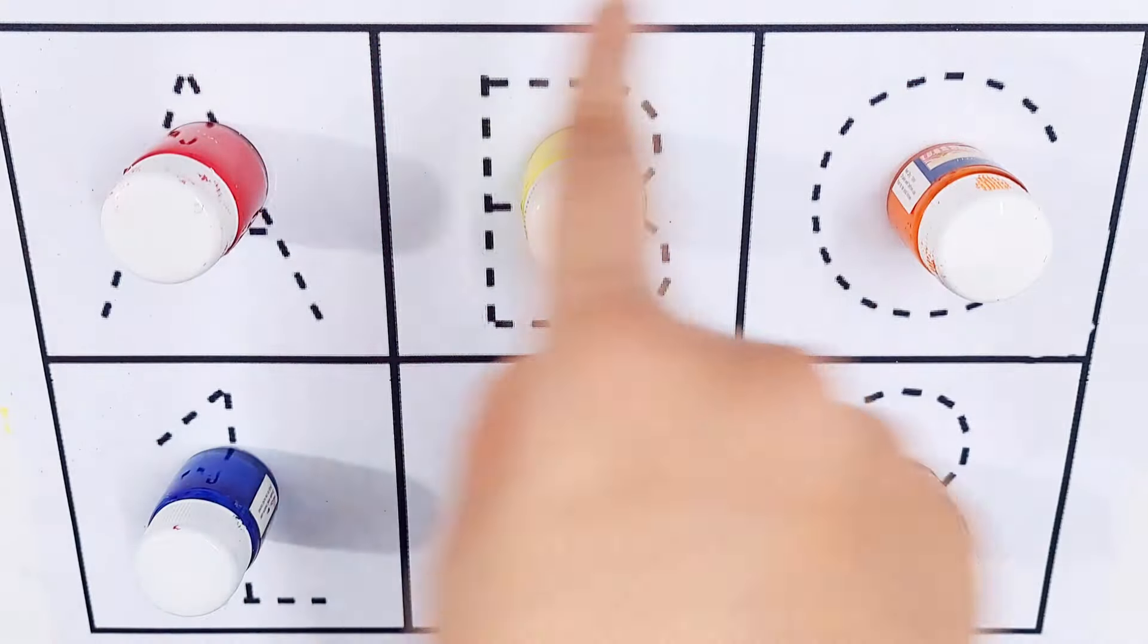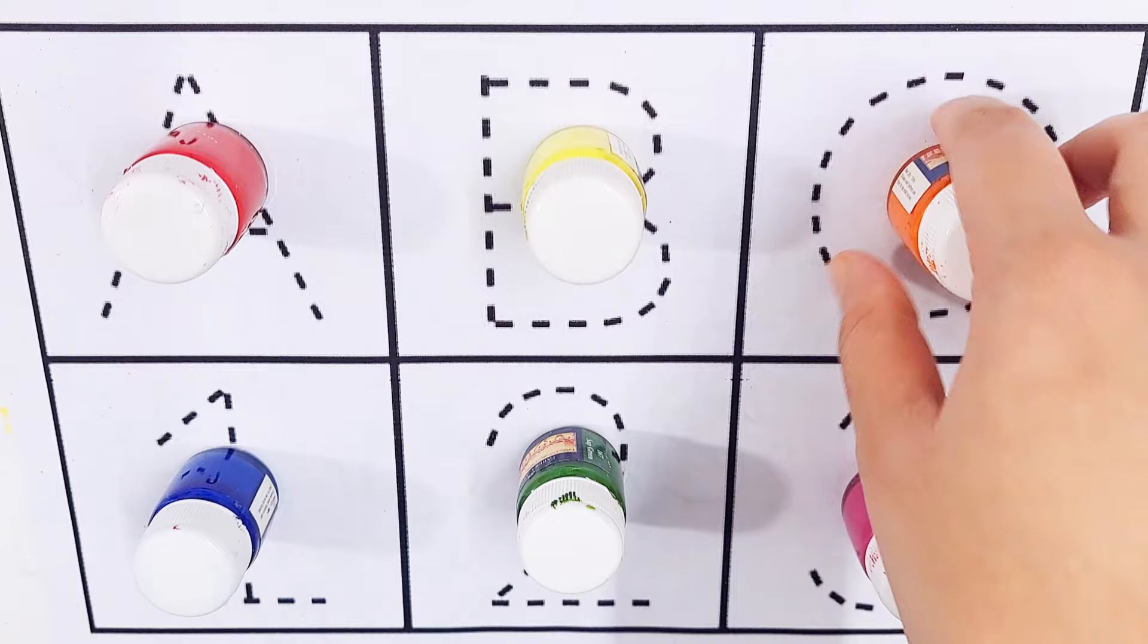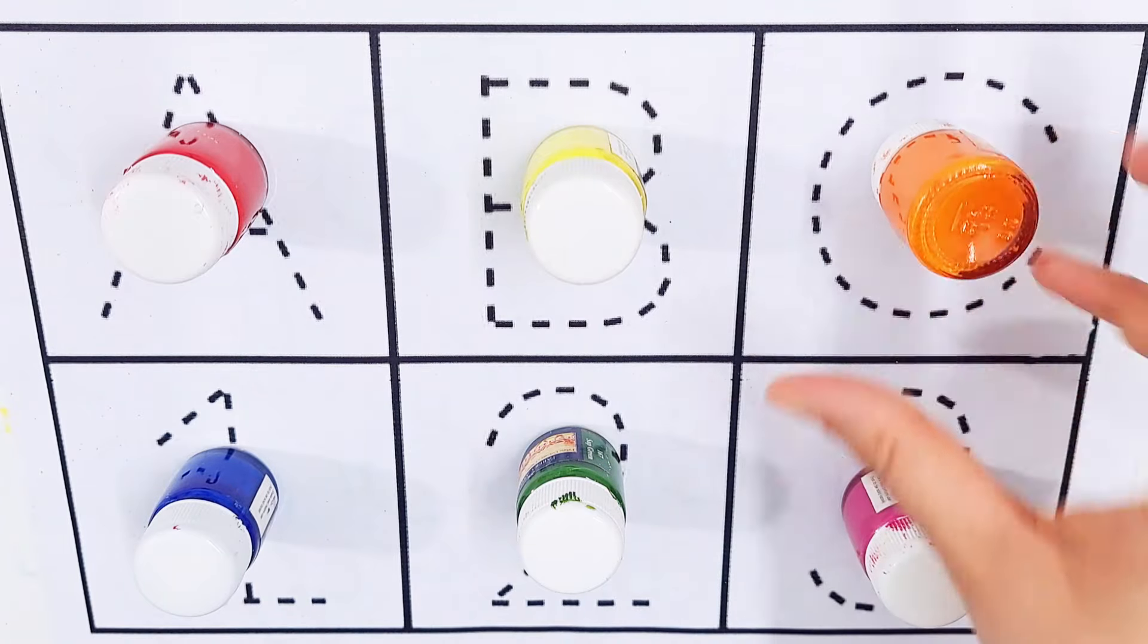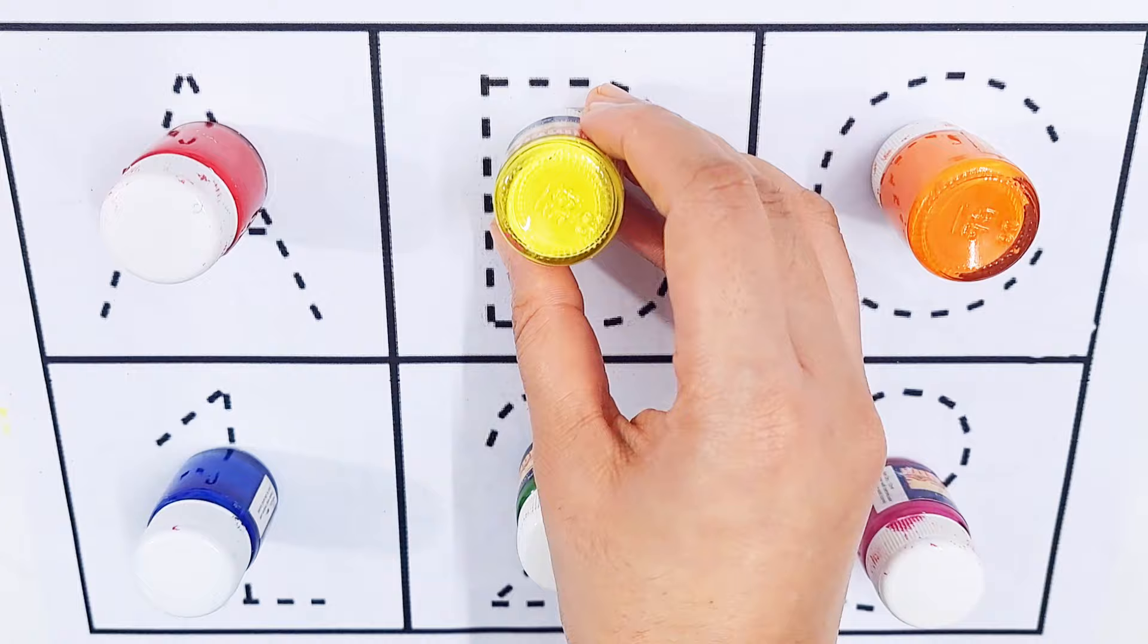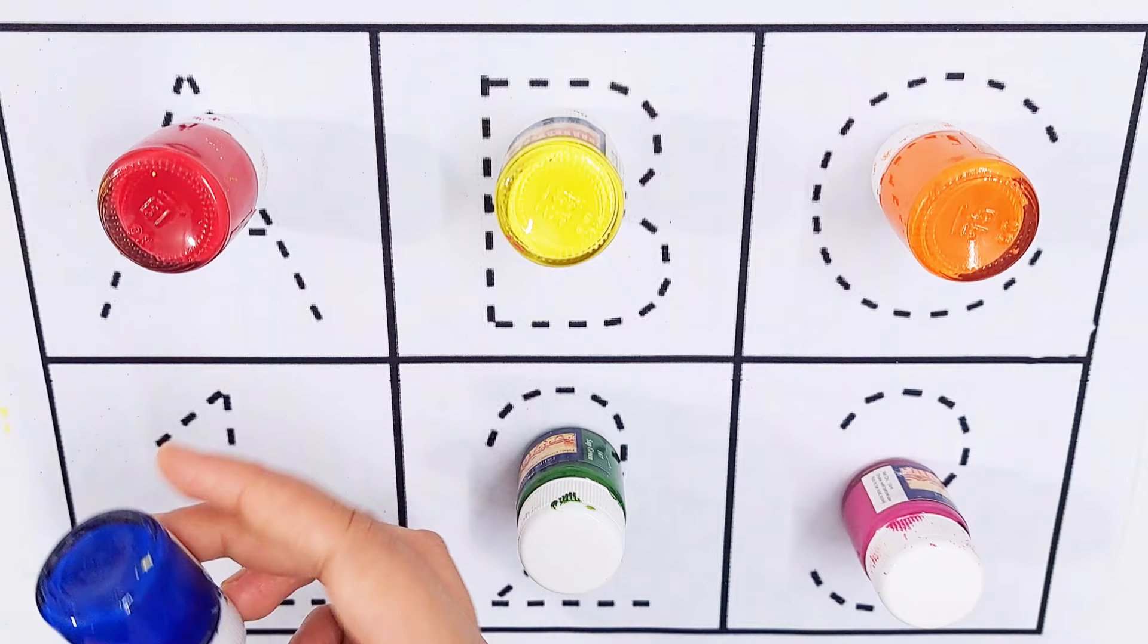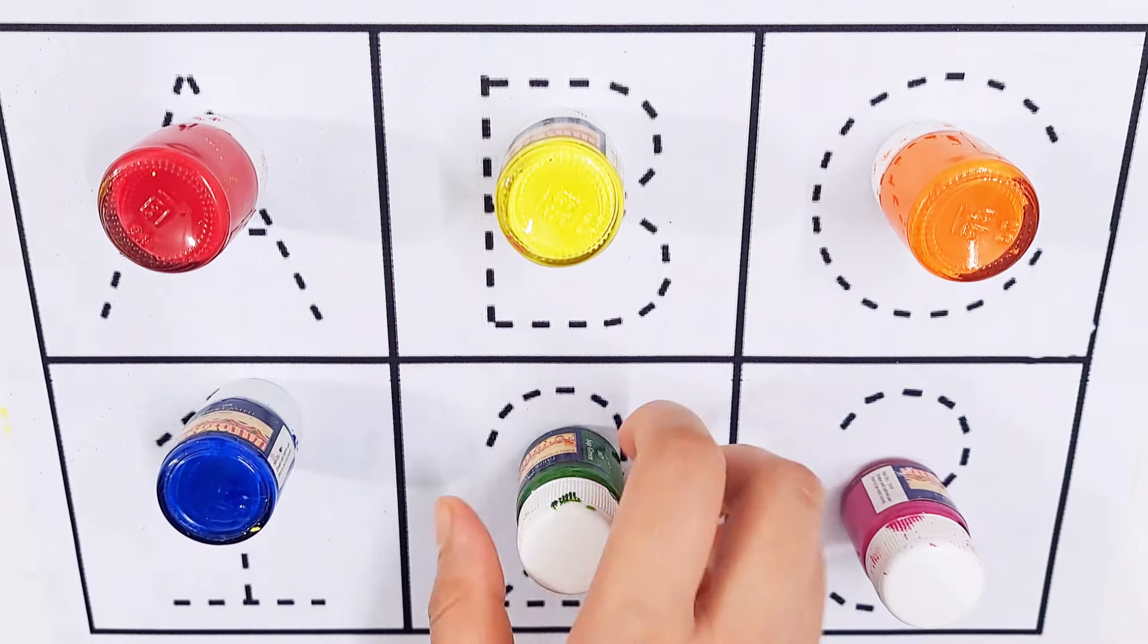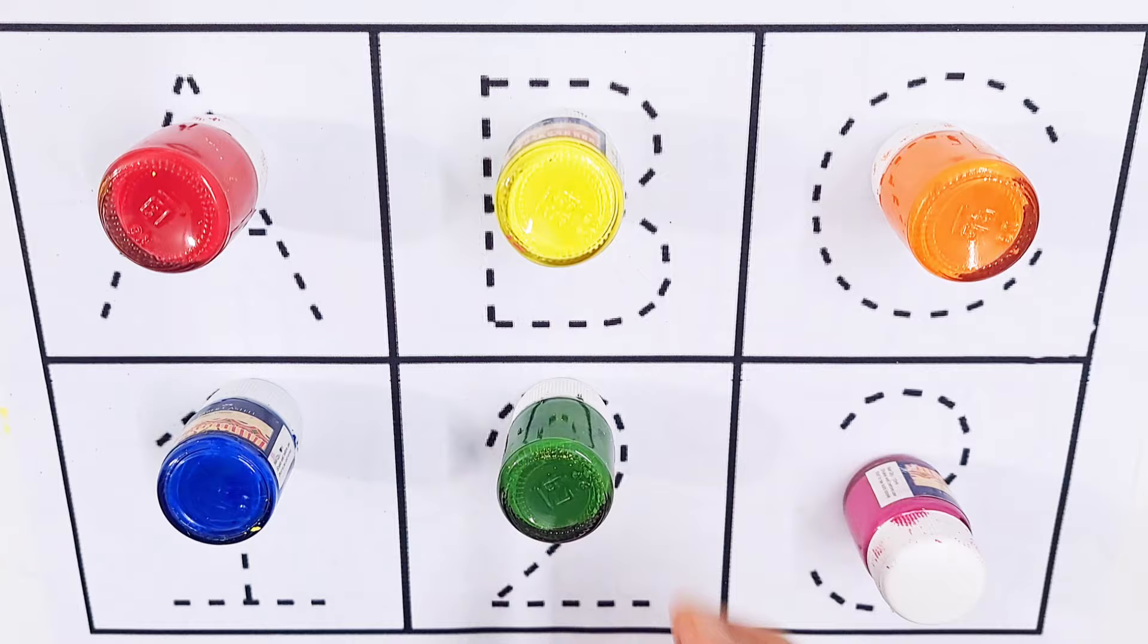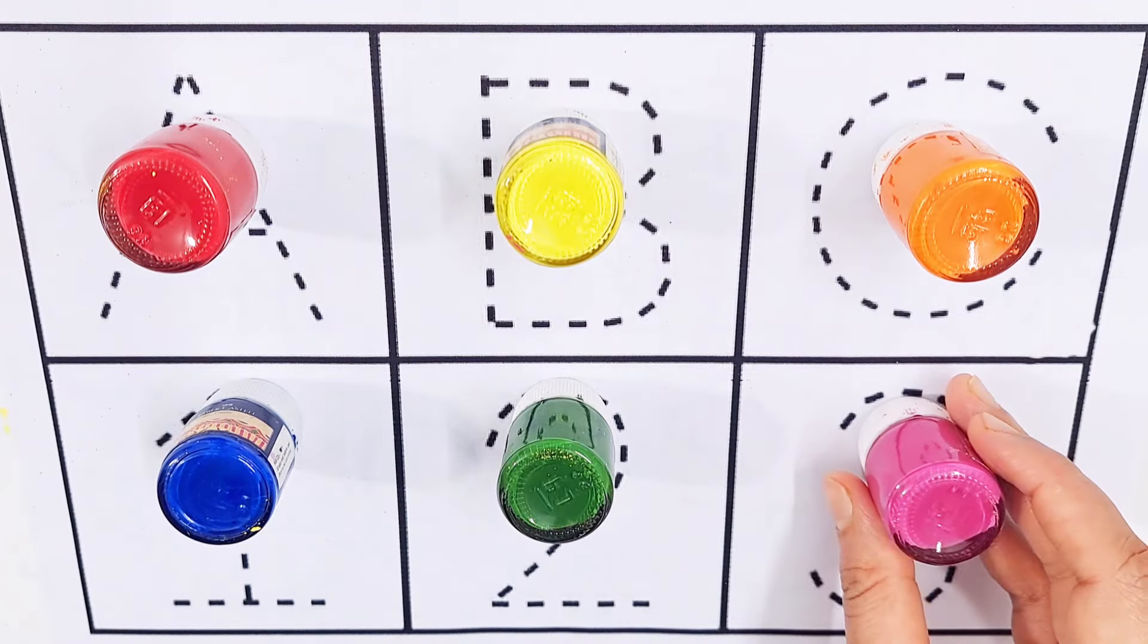Hello kids, let's learn some colors name. Orange color, yellow color, red color, dark blue color, green color, purple color.